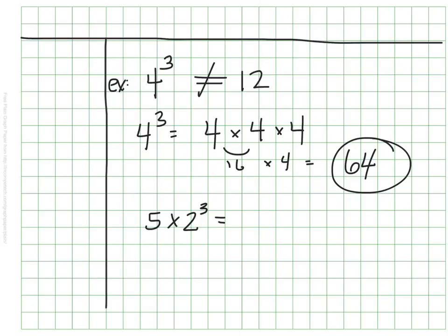If you said 30, you made a common mistake, right? Because 5 times 2 times 3 would be 30. But we know this here does not mean times 3. This is 5 times 2, and that 2 is being used and is showing up 3 times. So it's really 5 times 2 times 2 times 2.